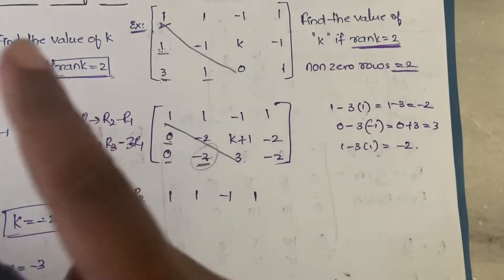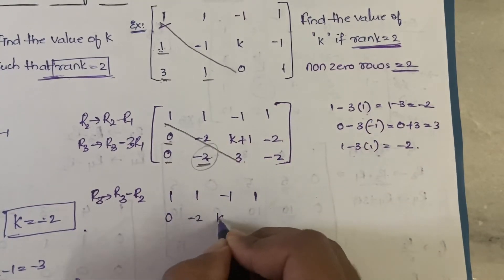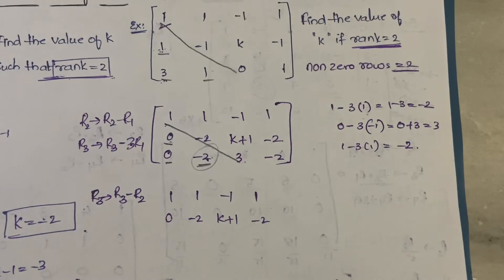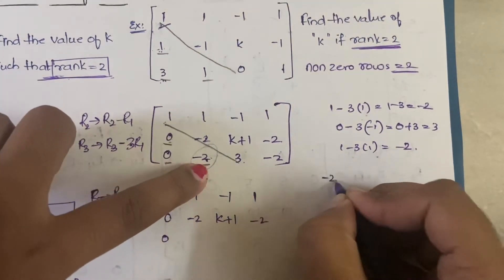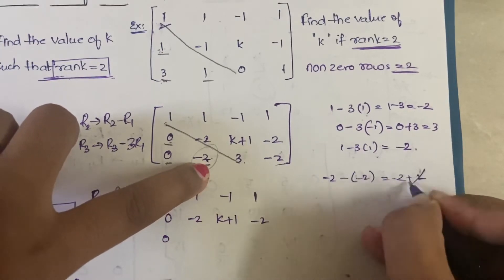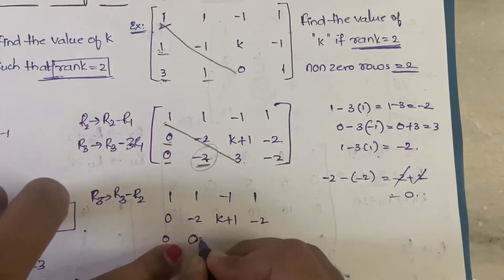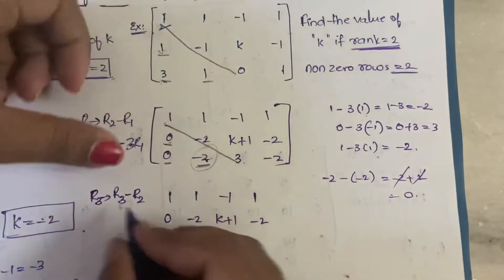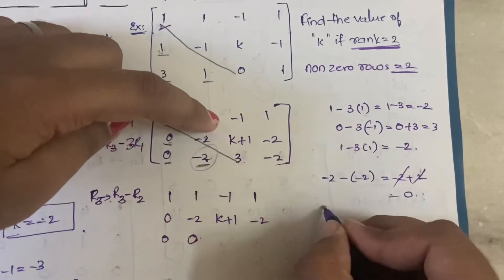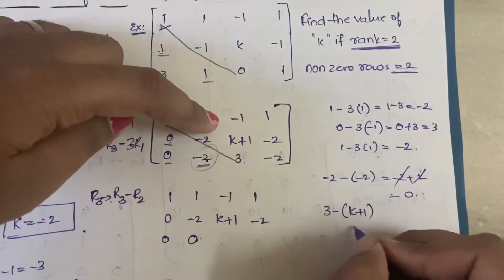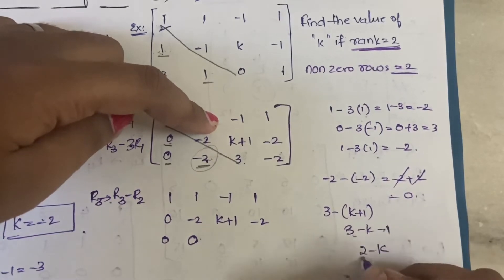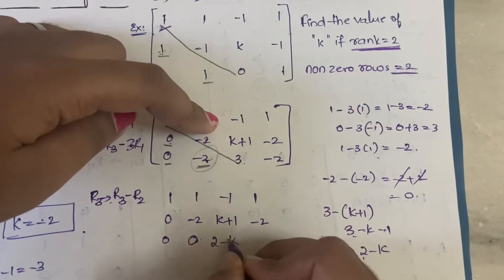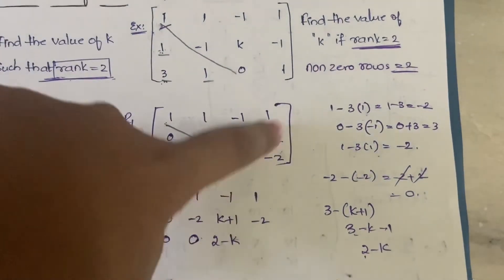Second row remains: 0, minus 2, k plus 1, minus 2. For R3 minus R2: 0 minus 0 is 0; minus 2 minus of minus 2 is minus 2 plus 2, giving 0; then 3 minus (k plus 1) is 3 minus k minus 1, which is 2 minus k; and minus 2 minus minus 2 gives 0.